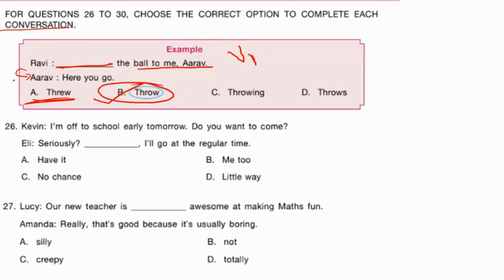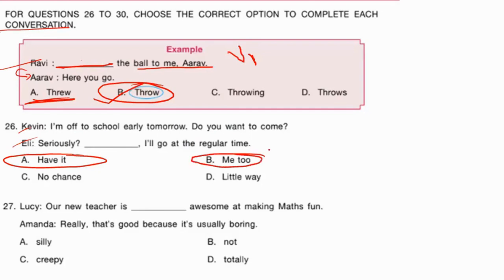'Kevin, I'm off to school early tomorrow, do you want to come?' 'Ellie: Seriously, ___ — I'll go at the regular time.' Ellie is not interested in going early. 'Have it' makes no sense. 'Me too' is used when you want to do the same thing, so that's wrong. 'No chance' means not interested — 'Seriously, no chance, I'll go at the regular time' — this is correct. 'Little way' makes no sense. The correct answer is no chance.